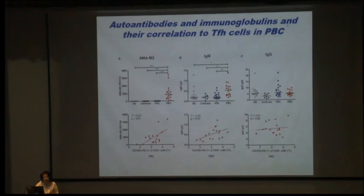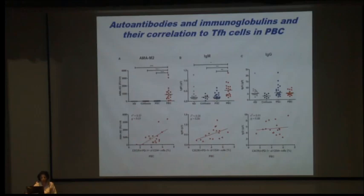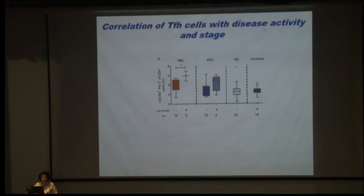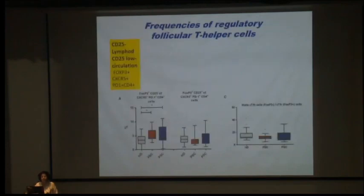Regarding AMA antibodies, immunoglobulins, and their correlation with T-FH cells in PBC: the AMA2 correlation with IgM and IgG showed R² values of 0.37 and 0.24, but there was a strong correlation — more T-FH cells corresponded to more anti-mitochondrial antibody M2 and AMA2 antibodies. T-FH cells also correlated with disease severity: higher fibrosis scores correlated with higher T-FH frequency and disease activity.